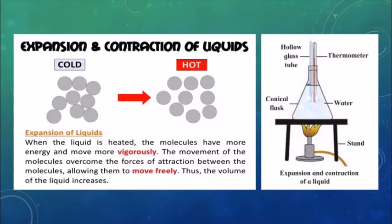Next is the expansion and contraction of liquid due to heat. For this, we take a conical flask with water, put a rubber cork on top, and insert a hollow tube and a thermometer. On the lower part we apply heat. After heating the water, we check the temperature and note the reading at every two degrees rise in temperature.